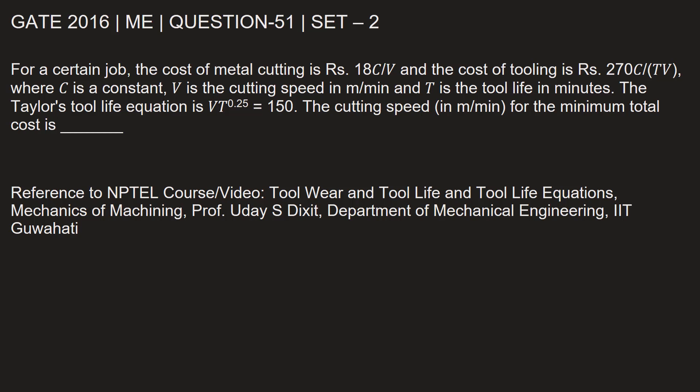The cutting speed in meters per minute for the minimum total cost is to be found. Let's identify the given information. First, cost of metal cutting, let that be CM = 18C/V. Cost of tooling, let that be CT = 270C/(TV).